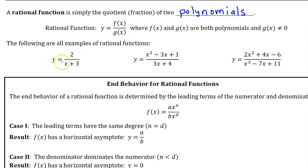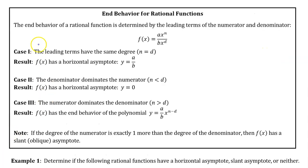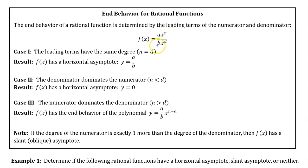Here are a few examples of rational functions. The end behavior of a rational function is determined by the leading terms of the numerator and the denominator. There are three cases. To explore those cases, let's use the model function f, where the leading term of the numerator is ax to the n power, and the leading term of the denominator is bx to the d power.